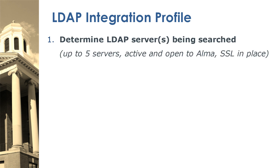1. Determine the LDAP server or servers that will be searched. It's currently possible to define up to five LDAP servers, which will be searched in sequential order until the user is authenticated. The servers must be active and open to Alma, which requires opening ports on the LDAP servers or firewall. SSL connections must also be secured with a certificate issued by a recognized certificate authority.